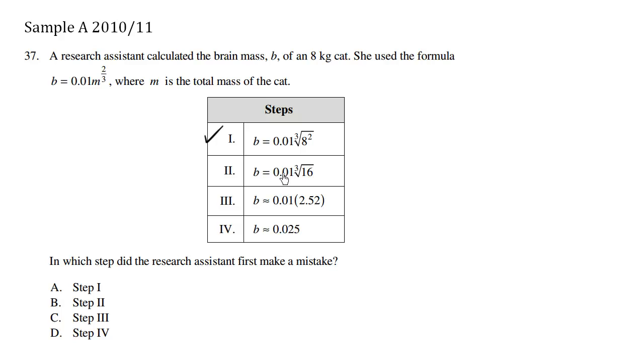Step 2. Just some basic algebra. 8 squared is not 16. We're supposed to be multiplying rather than simply adding 8 plus 8. It should be 8 times 8, which should be 64. So step 2 is incorrect. So step 2, B, is a mistake.